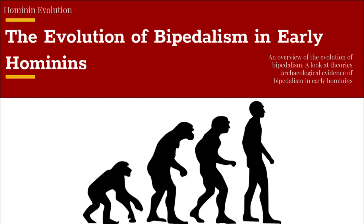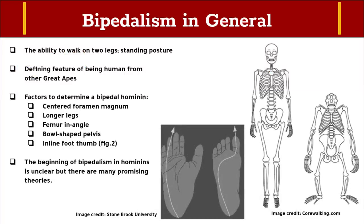As you can see, evolution is not a step-to-step process, but rather a continuous development of selected features to fit a niche in an environment, such as bipedalism. In general, bipedalism is the posture of walking upright on two legs.